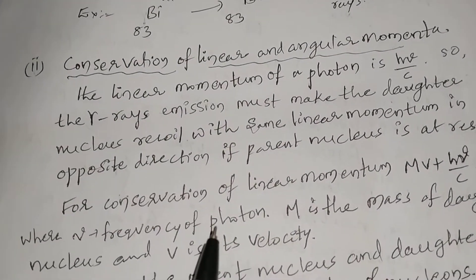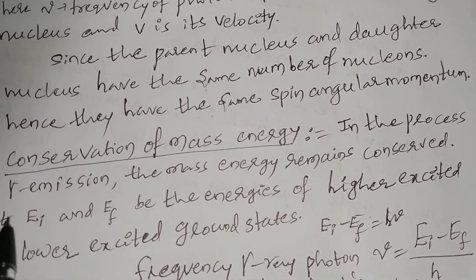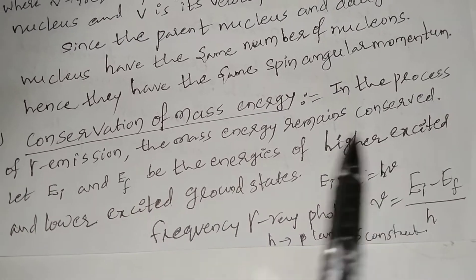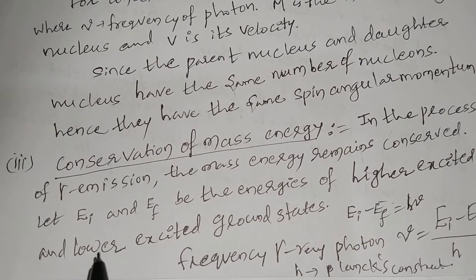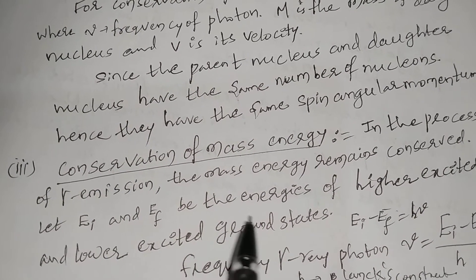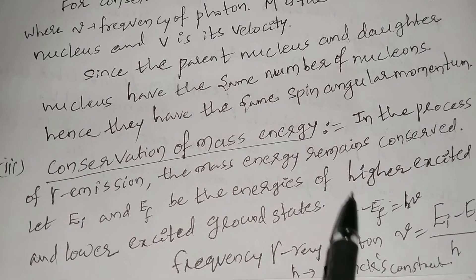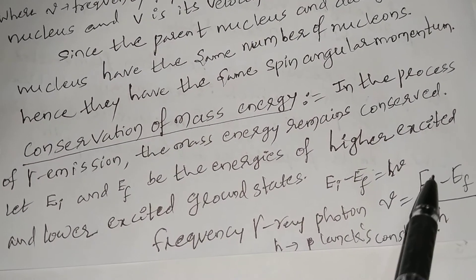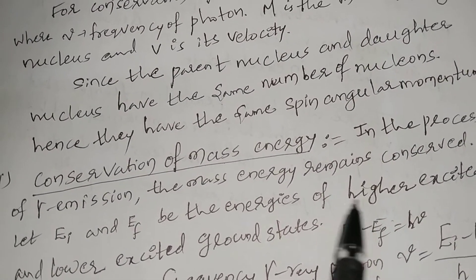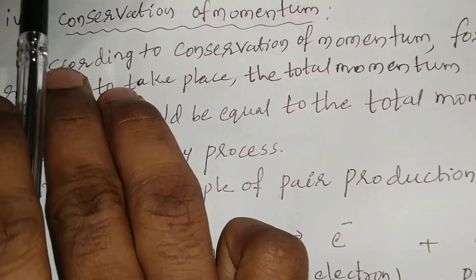Conservation of linear momentum and angular momentum is confirmed for gamma rays. In the process of gamma emission, mass-energy also remains conserved. Let E-suffix-i and E-suffix-f be the energies of the higher excited and lower excited or ground states. The energy difference E_i minus E_f equals h·nu, meaning the energy difference equals the photon energy. From this, the photon frequency nu equals (E_i minus E_f) divided by h. Thus mass-energy is conserved in gamma ray emission.